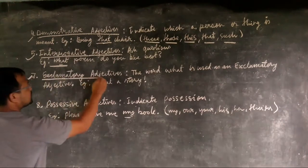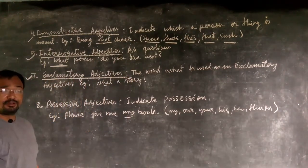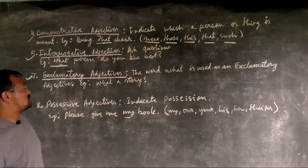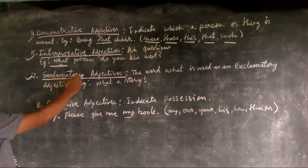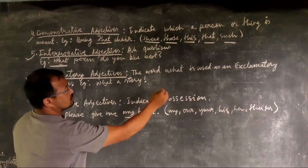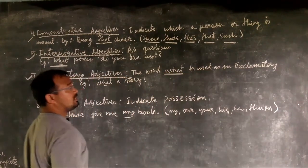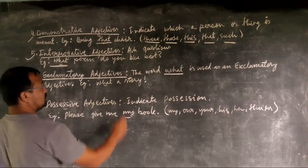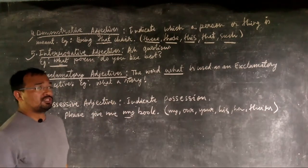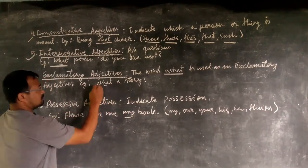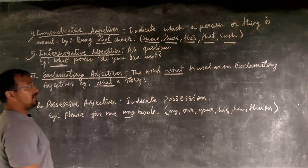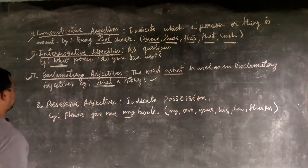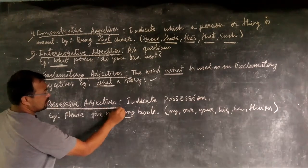The sixth type is the exclamatory adjective. Like exclamatory sentences, it shows strong and sudden feelings and ends with an exclamation mark. The word 'what' is used as an exclamatory adjective. For example, 'What a story!' — this sentence shows strong sudden feelings, so 'what' here is an exclamatory adjective.